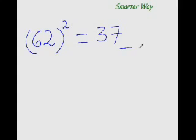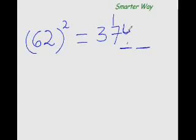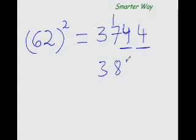Now 2 more digits to go. The square of 12 is — well, we have learned that in the previous video, how to find the squares of numbers from 1 to 30 — so you know that it is 144. I have just carried forward 1 and written the two fours there. Now 37 plus 1 is 38, and copy these two fours as they are. So 3844 is the answer.